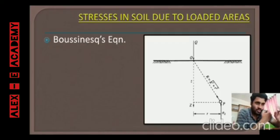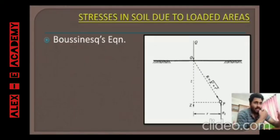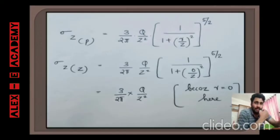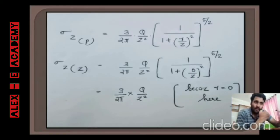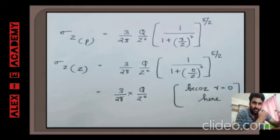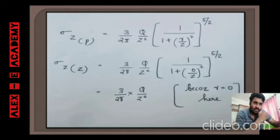The equation is the same for both points, but the values of r and z differ. The Boussinesq equation for vertical stress σz under a point load is: σz = (3/2π) × (Q/z²) × [1 / (1 + (r/z)²)]^(5/2). In this equation, Q is the point load, z is the depth, and r is the horizontal distance from the line of action, as defined in the figure.